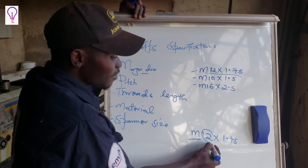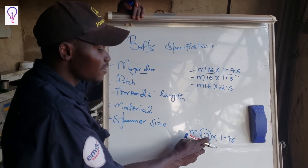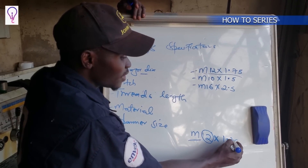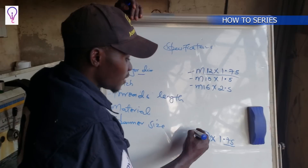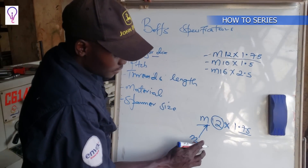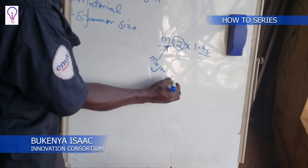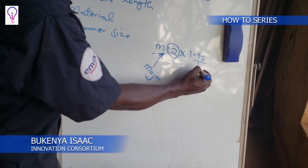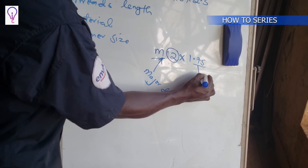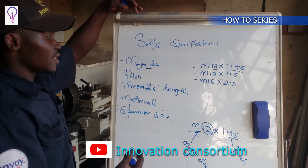The 12 is the size of the diameter, so the major diameter is 12. Then times the pitch — for example, 1.5. So that is how they specify the bolts: major diameter times the pitch.